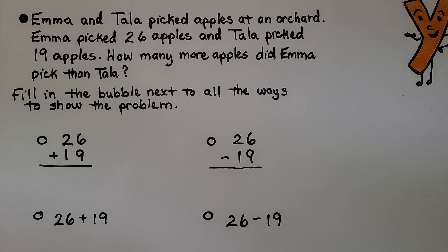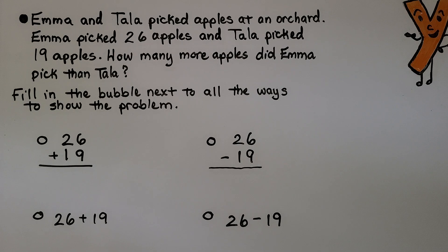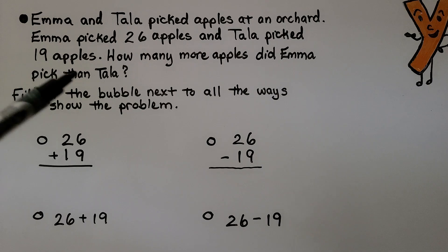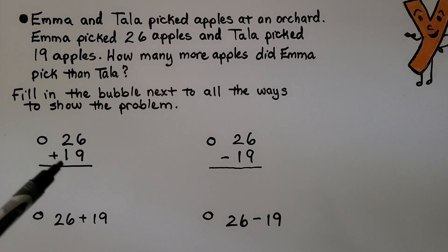Emma and Tala picked apples at an orchard. Emma picked 26 apples and Tala picked 19 apples. How many more apples did Emma pick than Tala? We need to fill in the bubble next to all the ways to show the problem. Would we show it as 26 plus 19? No — 'how many more' means we're comparing the two numbers and need to find the difference, so it wouldn't be addition.